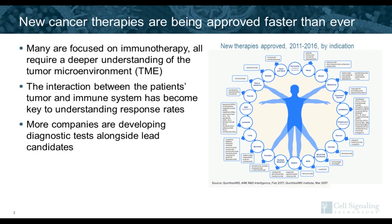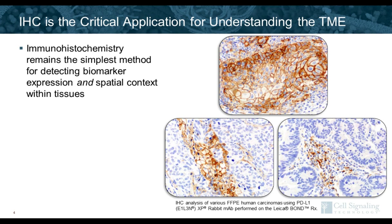New cancer therapies are being approved faster than ever. While many are focused on immunotherapy and antibody-based therapeutics, they all require a deeper understanding of the tumor microenvironment. It has become clear that even small molecule inhibitors can be affected by conditions within the TME, and that understanding these conditions is key to predicting response rates and efficacy of all cancer treatments. Many companies are developing biomarker-driven diagnostic tests alongside lead drug candidates, and many of these diagnostic tests today are based in singleplex chromogenic IHC.